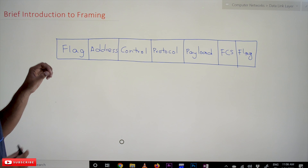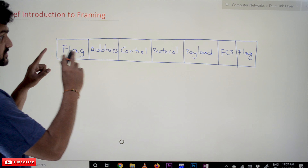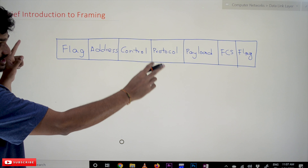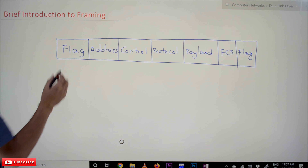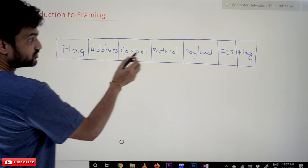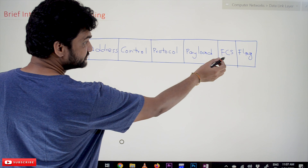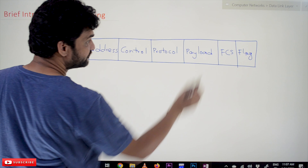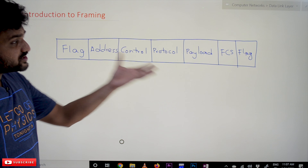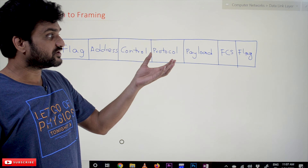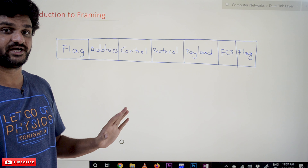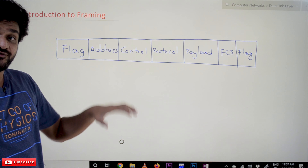These are the fields that we have in the frame: flag, address, control, protocol, payload, FCS, and flag. These are the fields, and what these fields are and what is the use of adding these fields we will try to understand later.